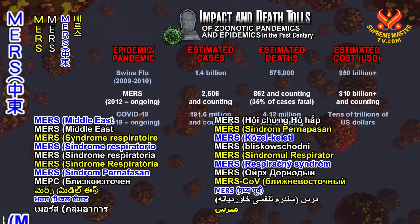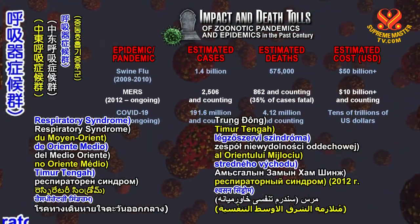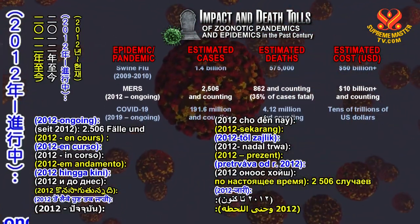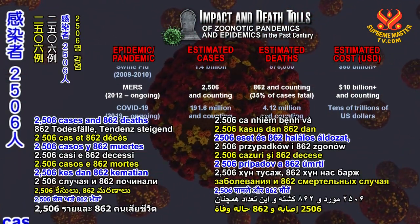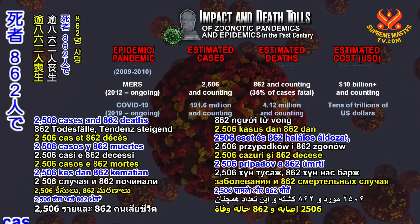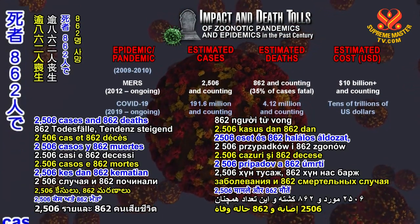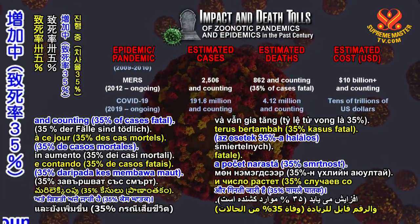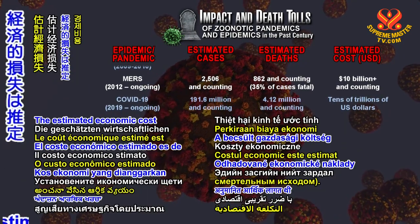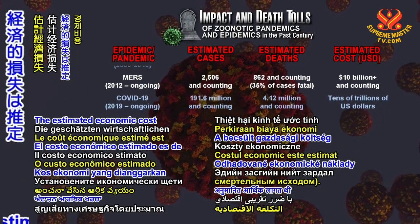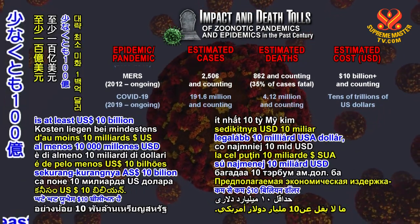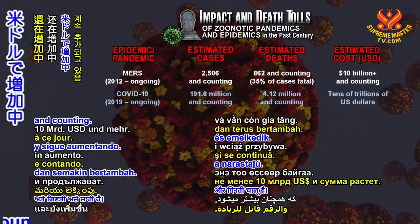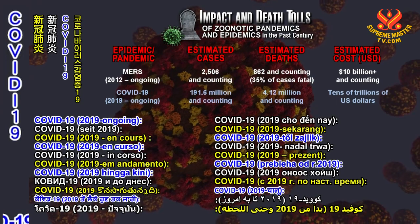MERS (Middle East Respiratory Syndrome), 2012 to ongoing: 2,506 cases and 862 deaths and counting, 35% of cases fatal. The estimated economic cost is at least 10 billion U.S. dollars and counting.